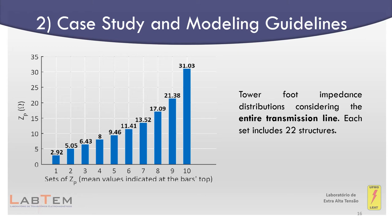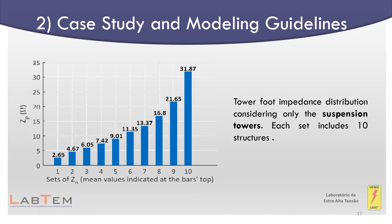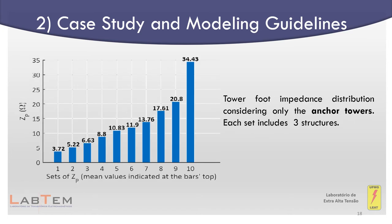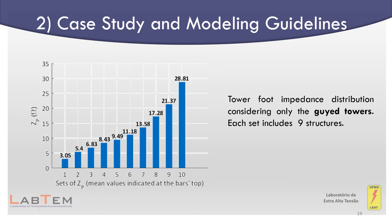The same procedure, but specifically considering the suspension, anchor, and guyed towers, was carried out and is presented in the following slides. Here it is represented the tower foot impedance distribution considering only the suspension towers, where each set includes 10 structures. In the next slide it is represented the tower foot impedance distribution considering only the anchor towers, where each set includes three structures. These distributions are used in the methodology proposed by this work.